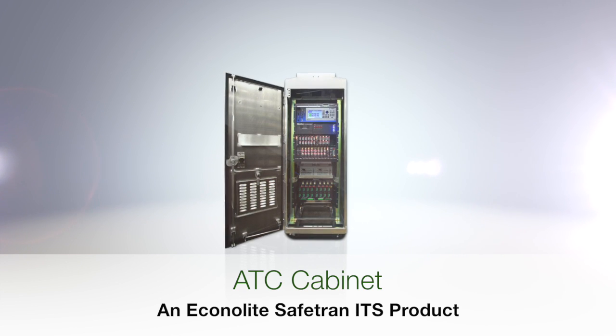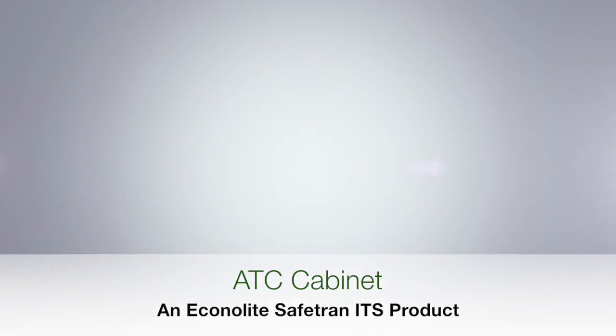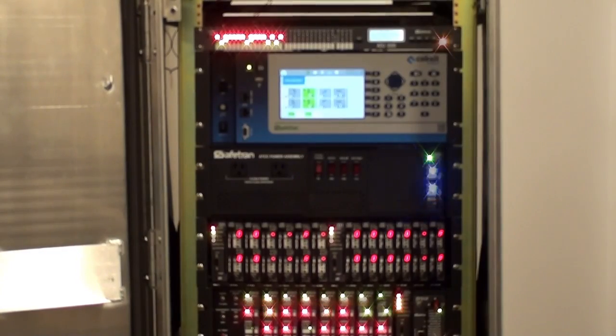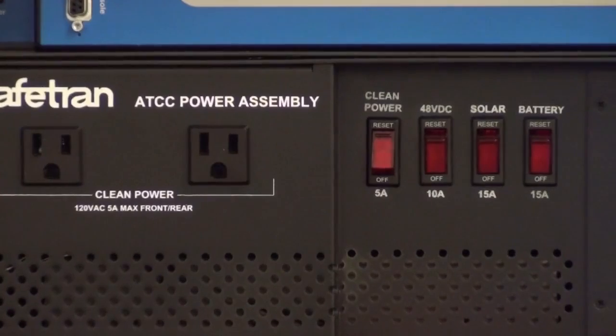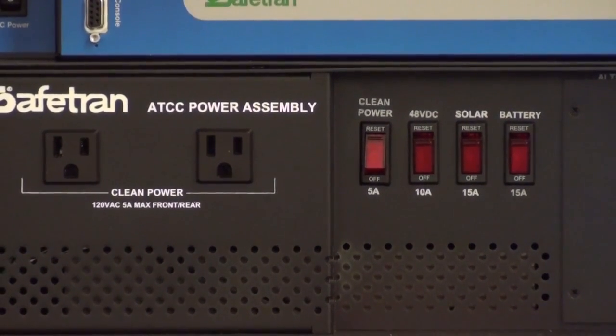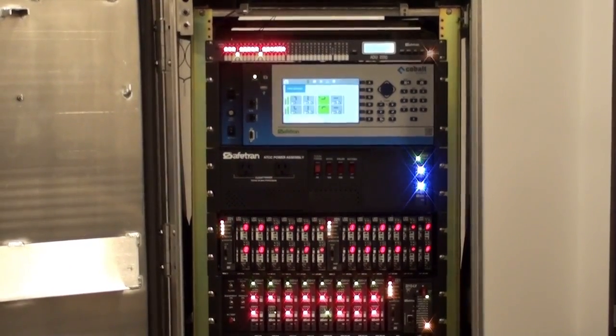The ATC cabinet provides both voltage and current monitoring of all signal outputs, even low-power LEDs. The innovative SafeTran power assembly accepts 120 volts AC and a variety of alternative power sources, providing smarter, safer, and greener intersection operations.